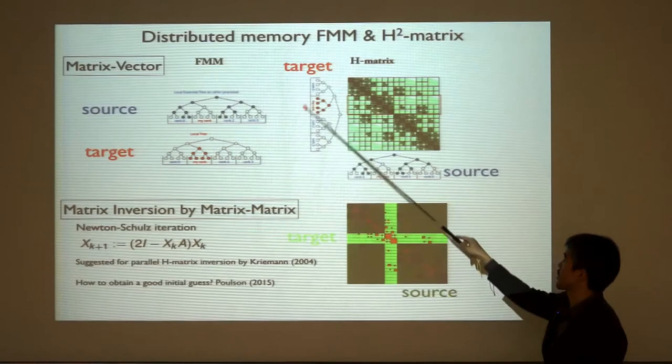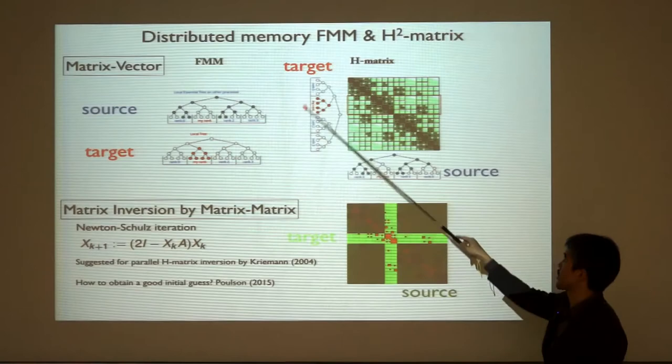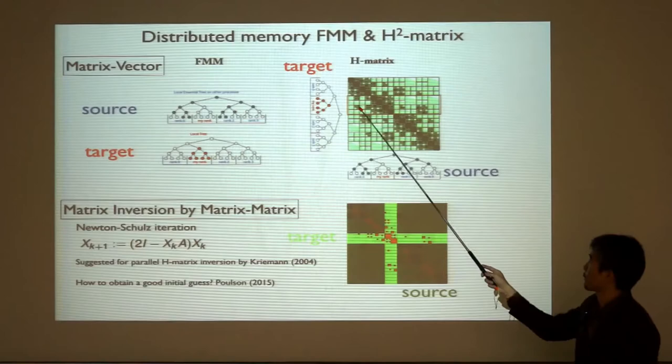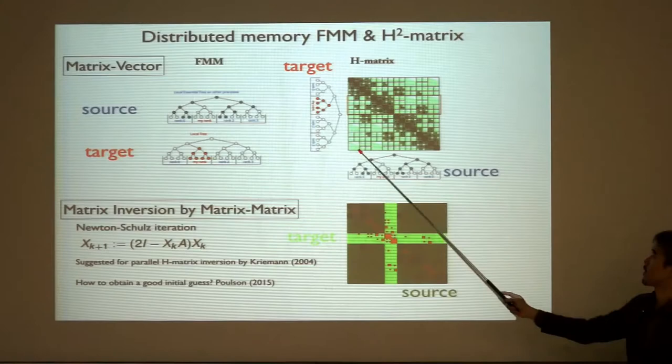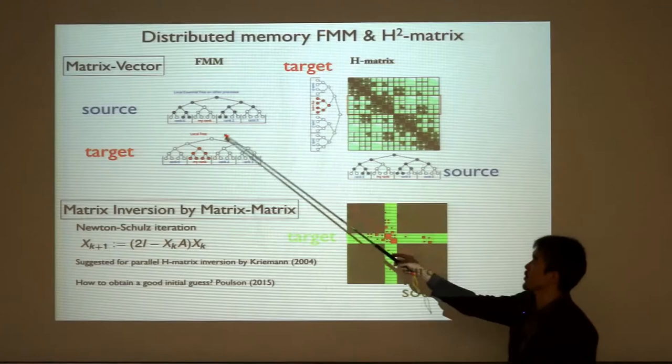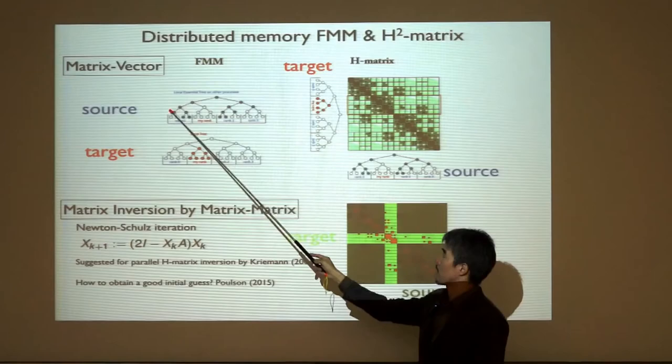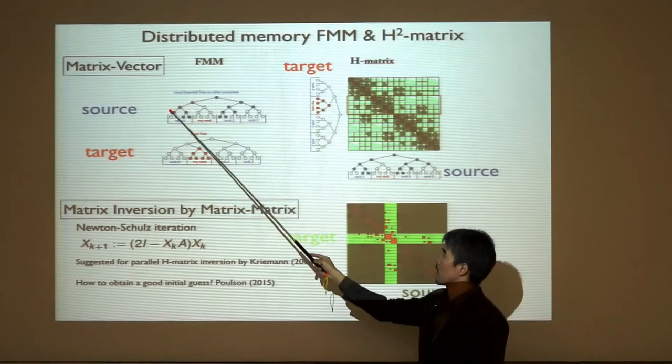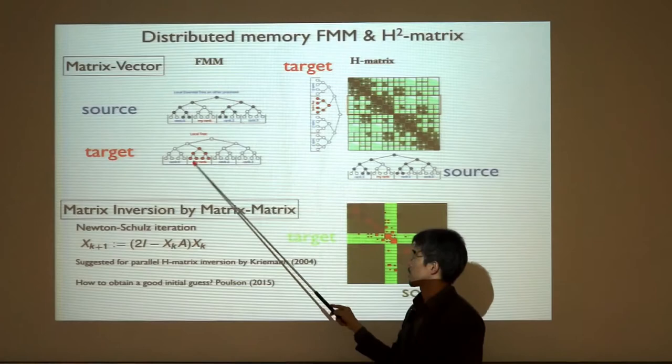In FMM partitioning, each MPI rank owns a subtree as a target, and then collects the parts of the global source tree it needs — this is called the local essential tree. In matrix form, targets correspond to rows and the source tree spans columns. The local essential tree directly corresponds to a block of the H-matrix — specifically the row block owned by that rank.